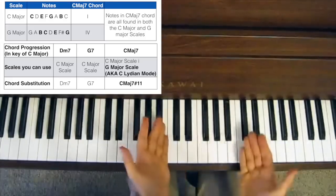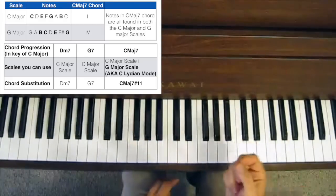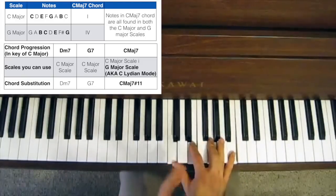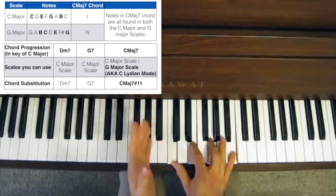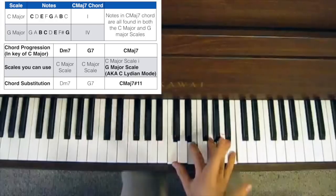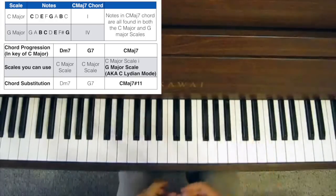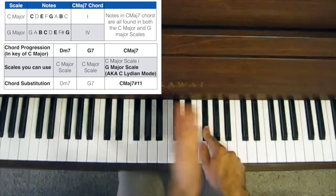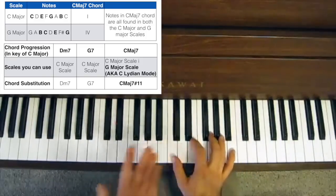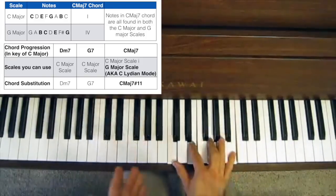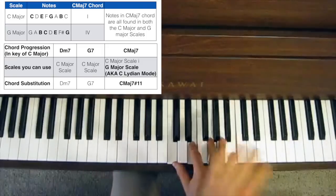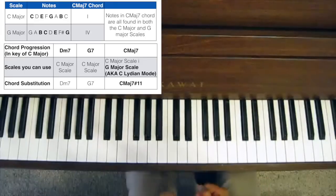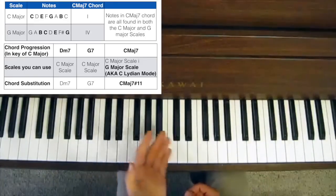So the C major 7 chord is both the 1 chord of the key of C major and the 4 chord of the key of G major. And obviously, the reason that's the case is because all the notes from the chord C major 7 are in both the C major scale and the G major scale. The only difference is that the G major scale has the F sharp, but that's not in the chord of C major 7, so it doesn't really affect C major 7.